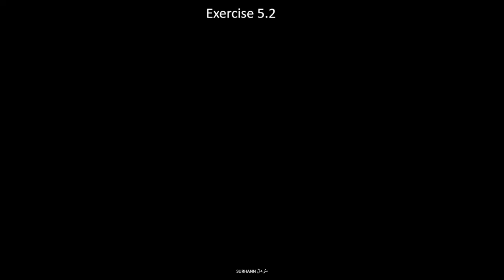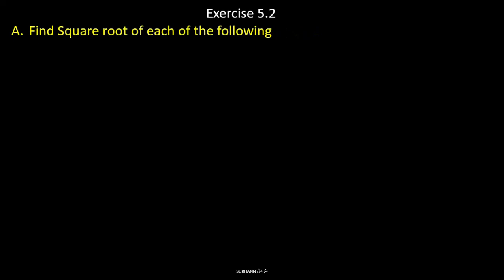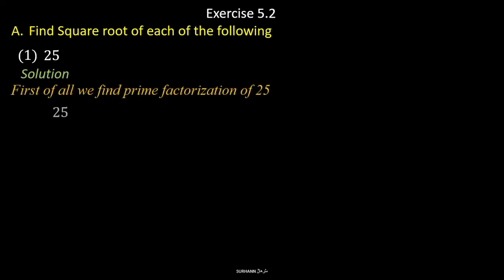In the name of Allah, the most beneficial and the most merciful. Now we will start Exercise 5.2, question number one. It says: find the square root of each of the following. Problem number one: 25. Here we have to find the square root of 25. For that, first of all, we find the prime factors of 25.